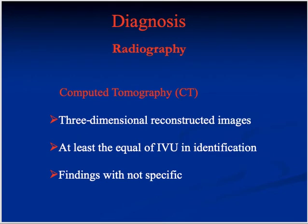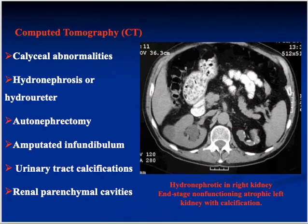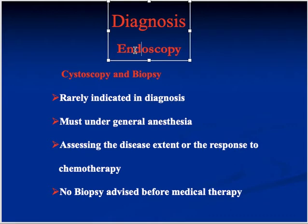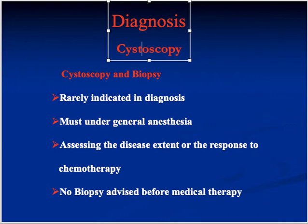CT scan can show calyceal destruction, hydronephrosis, and calcifications in more detail. Cystoscopy can be done to see the bladder from inside — to check for fibrosis, strictures, and other abnormalities. A biopsy can even be taken, but biopsy is generally not advised before medical therapy.